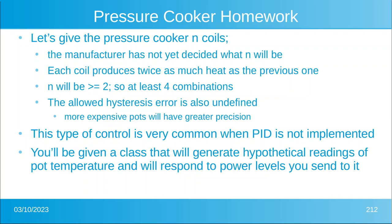Now let's look at the pressure cooker homework. The manufacturer hasn't decided how many coils it will have, but each coil will produce twice as much heat as the previous one — similar to the fans on my car. n will be greater than or equal to two, so there are at least four combinations. The allowed error is also unknown; more expensive pots will likely have greater precision. You'll be given a class that generates hypothetical readings of pot temperature and responds to power levels you send to it, so you have a way to test your controller.